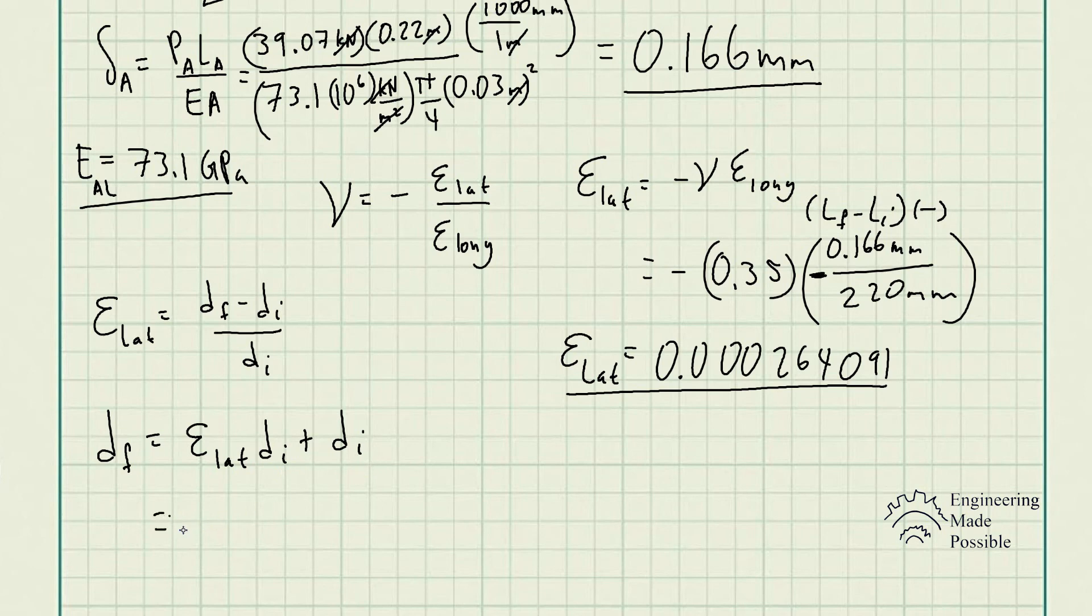Which at the end of the day gives us 30.008 millimeters is the final diameter of that cylinder. Since the length of this cylinder contracted, the diameter actually expanded to compensate for that constant volume that we have of that cylinder. And so finally, we get the final diameter is 30.008 millimeters.